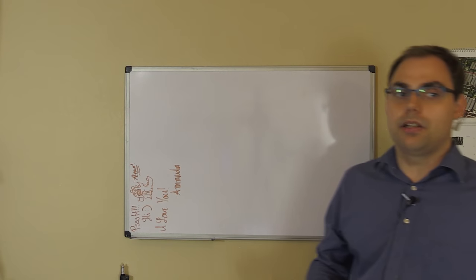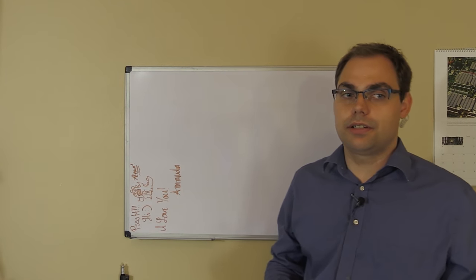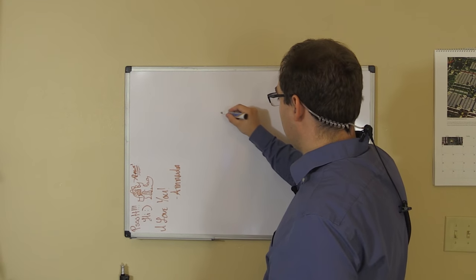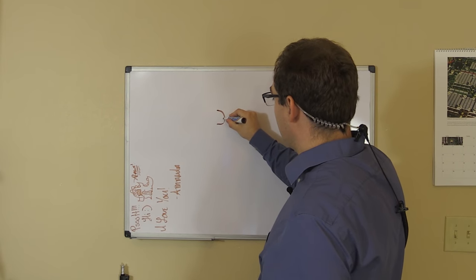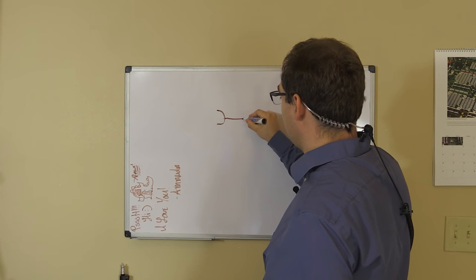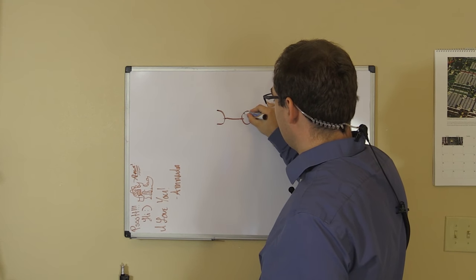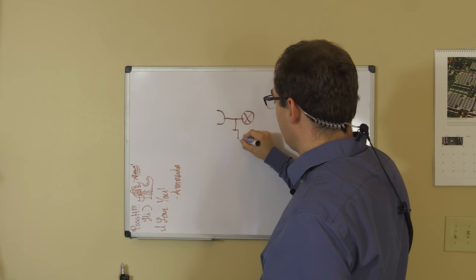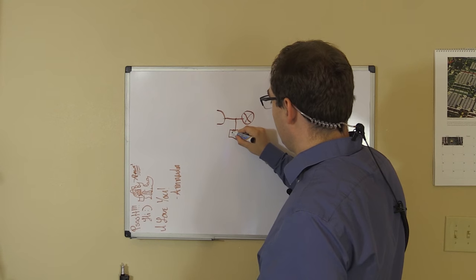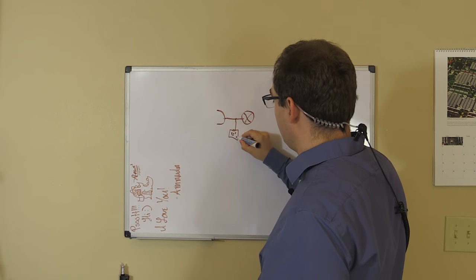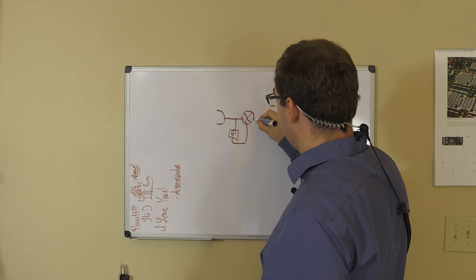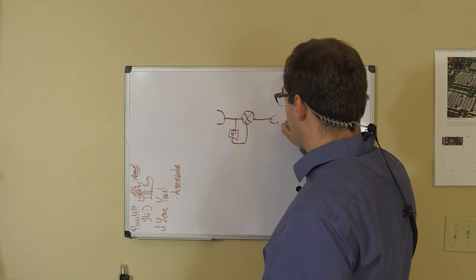There are two ways we're going to talk about. The first way is the easiest: your input goes to a mixer, through a 90-degree phase shift, back into the mixer, and here's your output.